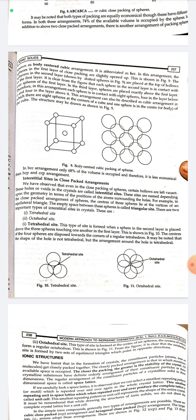In the BCC arrangement, the spheres in the first layer of close packing are slightly opened up. The spheres in the second layer are placed at the top of the hollows in the first layer, with each sphere in the second layer in contact with four spheres of the first layer. In the BCC arrangement, only 68% of the volume is occupied, and therefore it is less economical than HCP and CCP arrangements.